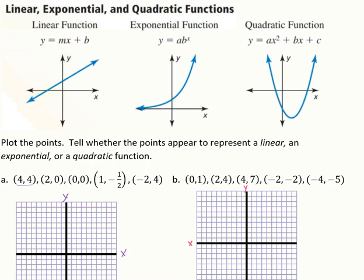A linear function has the form y equals mx plus b, and is a straight line. An exponential function is denoted by y equals a times b raised to the x — it starts low and then swoops up in an upward motion. Then we have our quadratic function, which is y equals ax squared plus bx plus c, and creates a U-shaped graph.